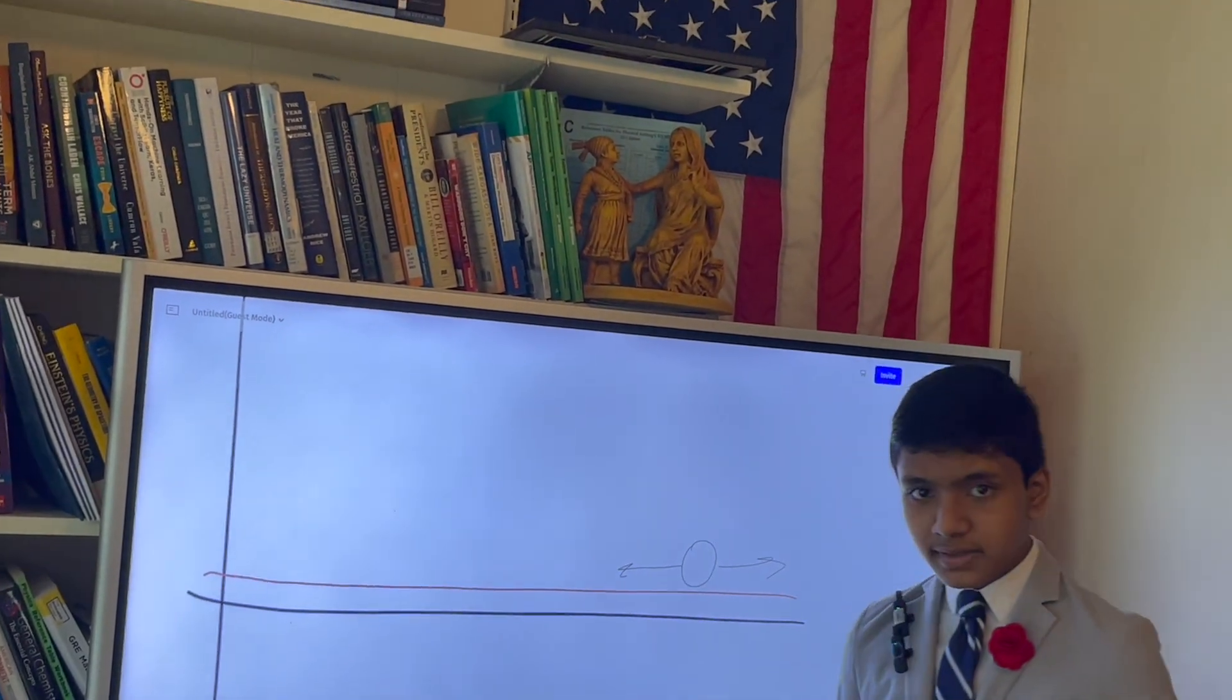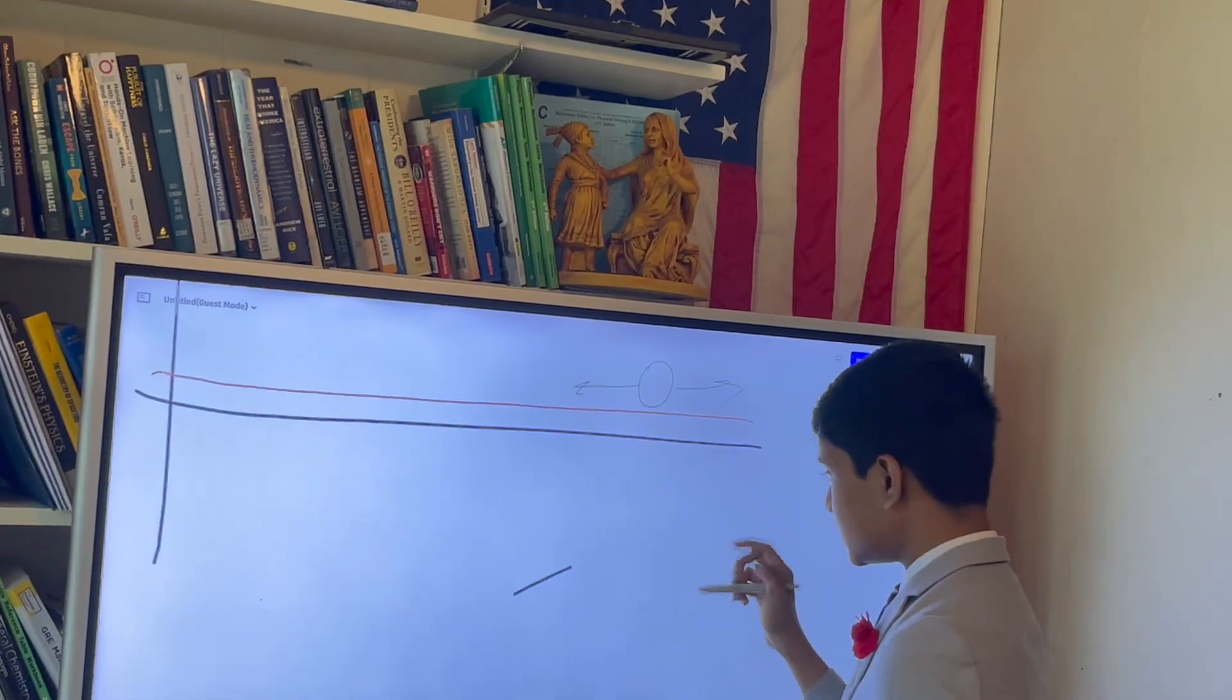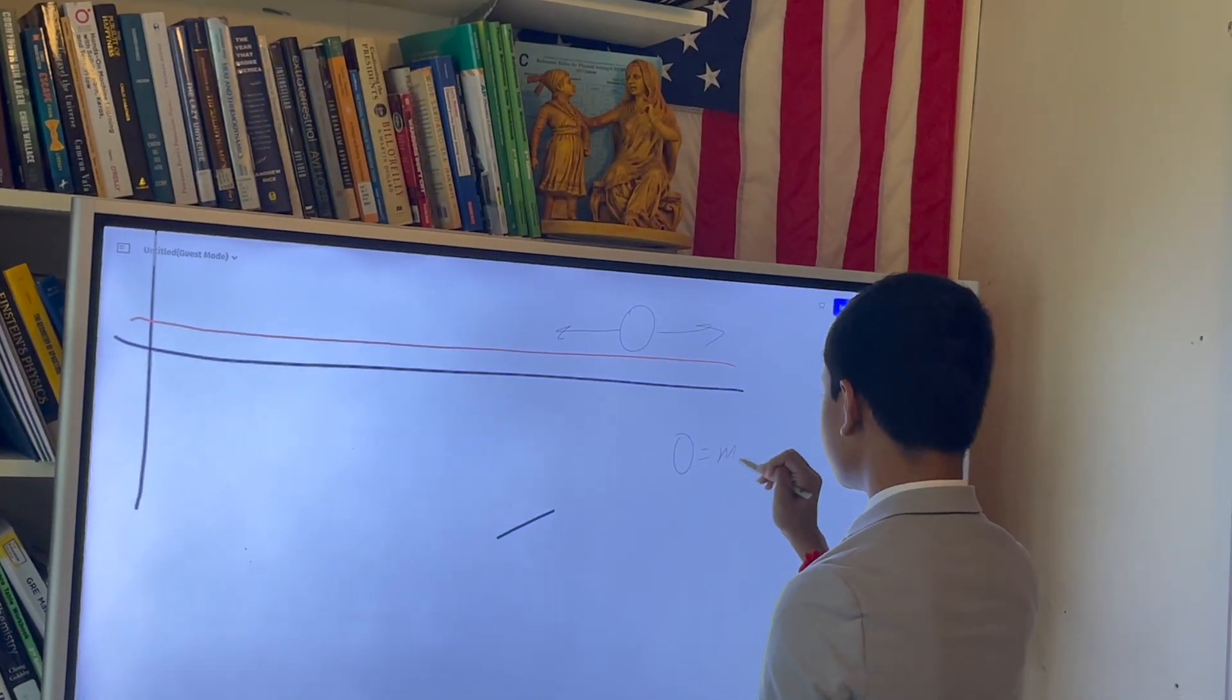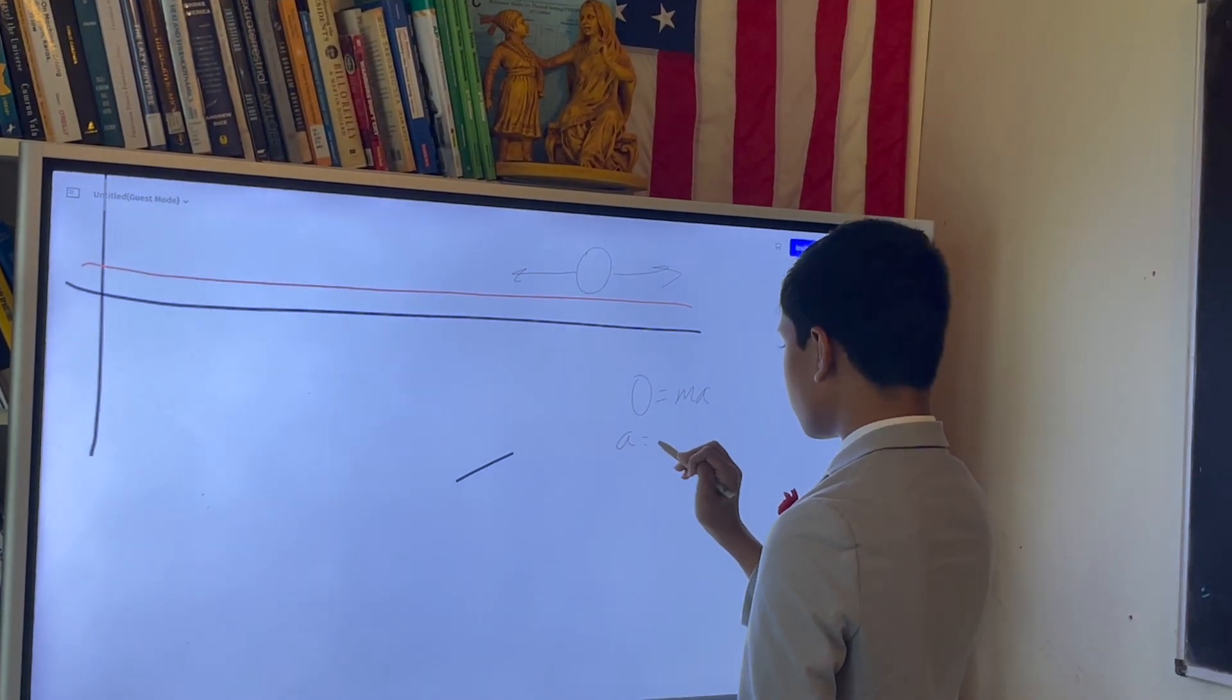And so, in classical mechanics, this is fairly easy because you know zero is equal to ma, so a is equal to zero.